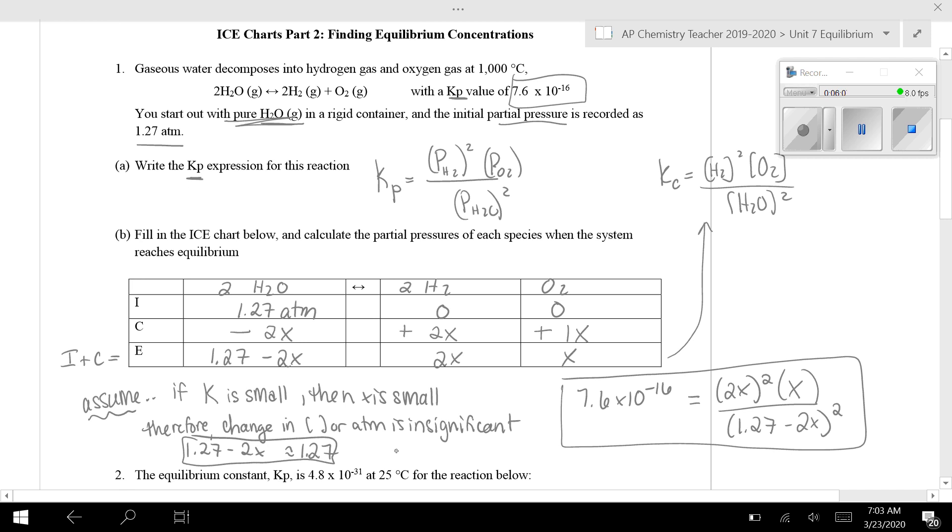And to clarify what I'm saying there is let's say we took 1.27 minus some super small number like 0.00001. It's going to be 0.12699999999, which is basically just 1.27. So this change is so much smaller than this original value, we can basically just ignore it. So that makes this math much easier.